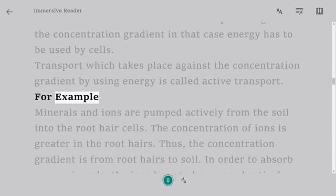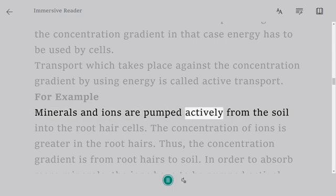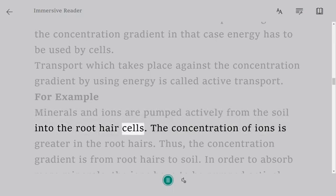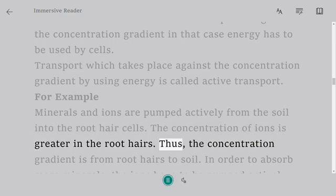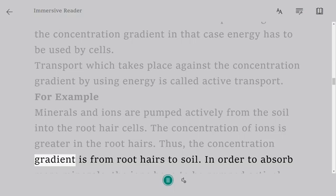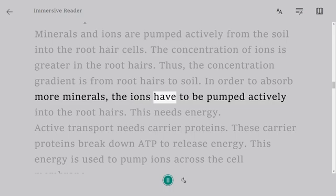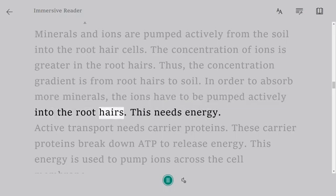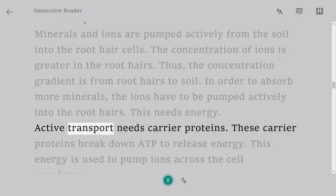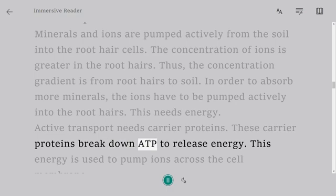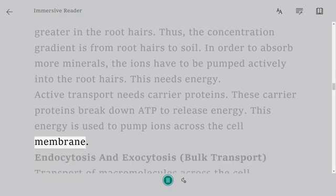For example, minerals and ions are pumped actively from the soil into the root hair cells. The concentration of ions is greater in the root hairs. Thus, the concentration gradient is from root hairs to soil. In order to absorb more minerals, the ions have to be pumped actively into the root hairs. This needs energy. Active transport needs carrier proteins. These carrier proteins break down ATP to release energy. This energy is used to pump ions across the cell membrane.